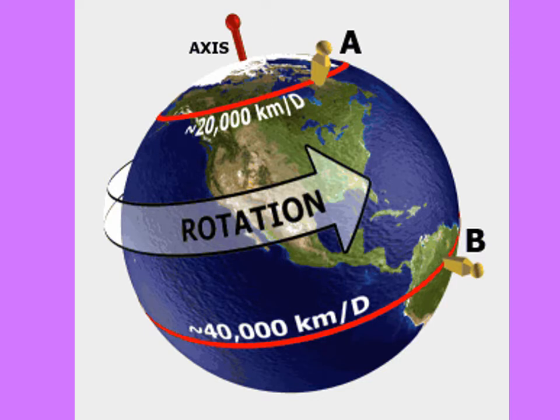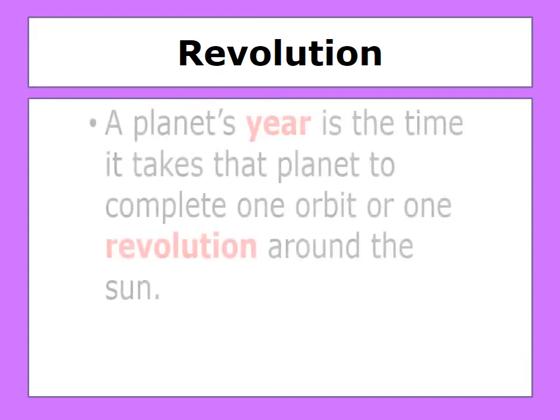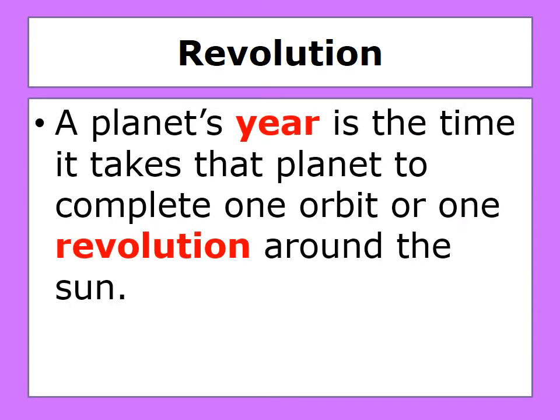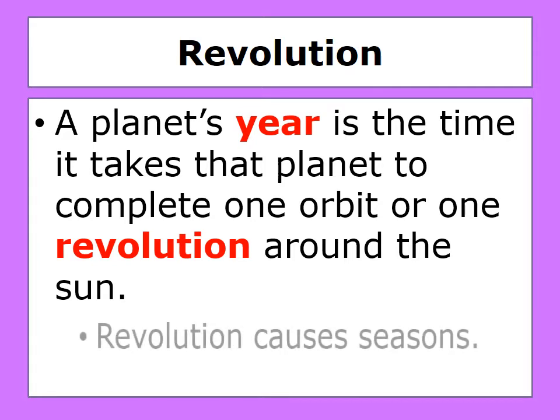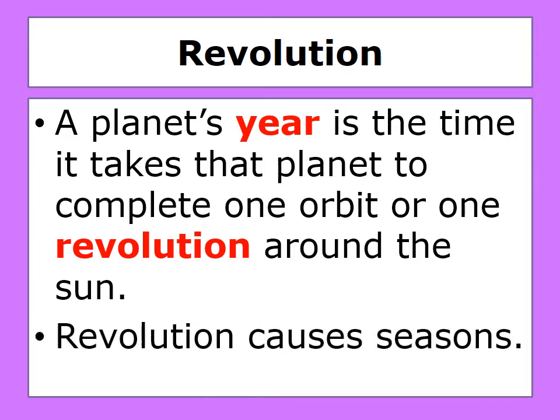Here we have rotation. Revolution — a planet's year is the time it takes that planet to complete one orbit or one revolution around the sun. Revolution causes seasons.